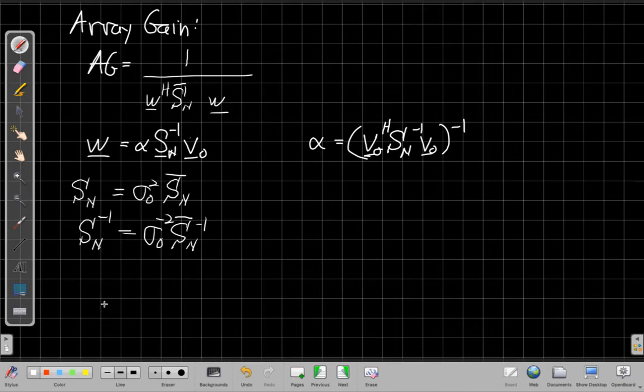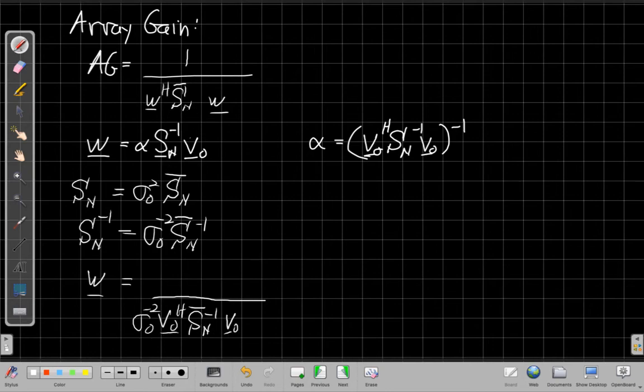And so if I plug this in up here and also for alpha, I'll have, I'll bring the alpha down to the denominator. And so I'll have V naught Hermitian. The SN inverse becomes a sigma naught to the minus 2 I'll pull out front. So that's this piece here coming out in front. SN bar inverse V naught. And then on the up above, I have an SN inverse, so that also becomes this. So I have another sigma naught squared times SN bar inverse times V naught. So again, I plug this in here and also within alpha and brought it in.